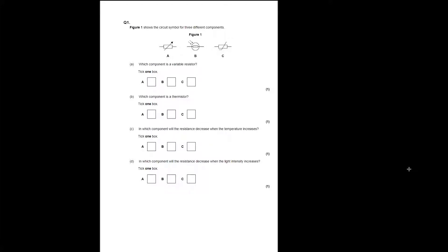Question one is for the foundation paper. Figure one shows the circuit symbol for three different components: A, B and C. Which component is a variable resistor? Component A is a variable resistor. This arrow shows that we can vary the resistance.